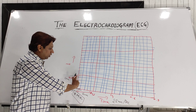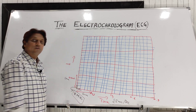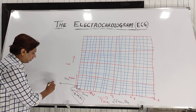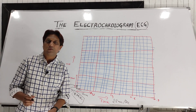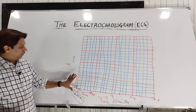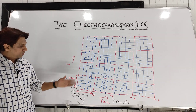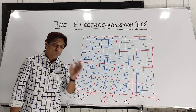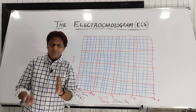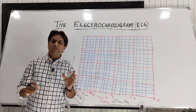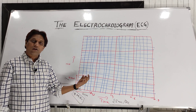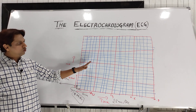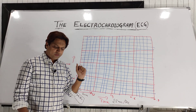The height or amplitude of one bigger square is 0.5 millivolts. So if we divide that by 5, the smaller square represents 0.1 millivolts. Two bigger squares will be equal to 1 millivolt roughly. You should remember the time duration on the x-axis and the amplitude on the y-axis, most importantly the time duration, because if waves are not within the normal time duration range, we can diagnose so many clinical conditions. Before discussing that, we should know the normal waves, intervals, and segments in Lead 2.